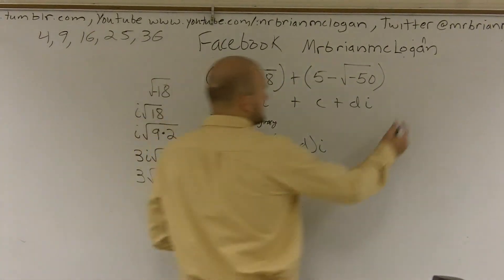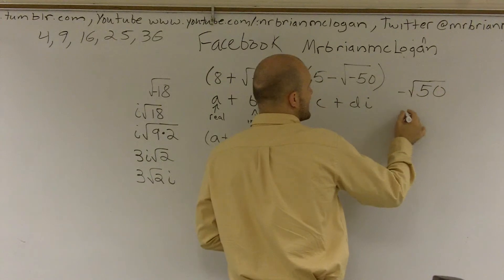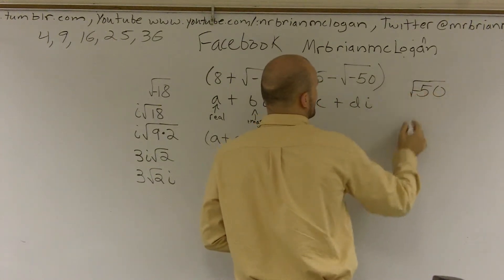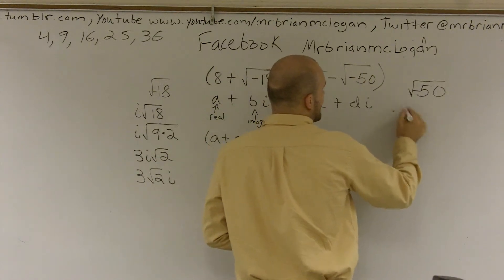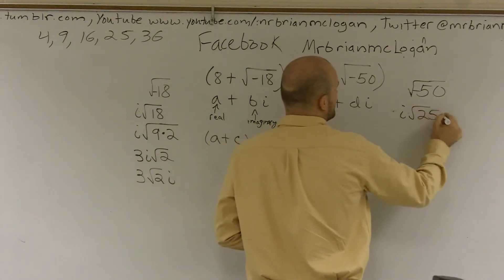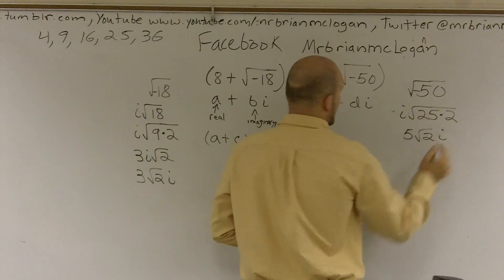So then for negative 50, I'll do this a little bit quicker. I can rewrite this as, let's see, this is going to be, again, you can take this as i times the square root of 25 times 2, which will become 5 times the square root of 2 now.